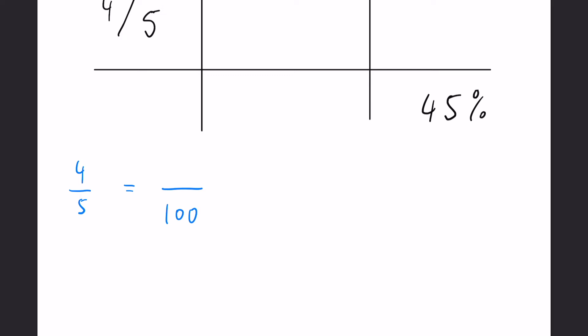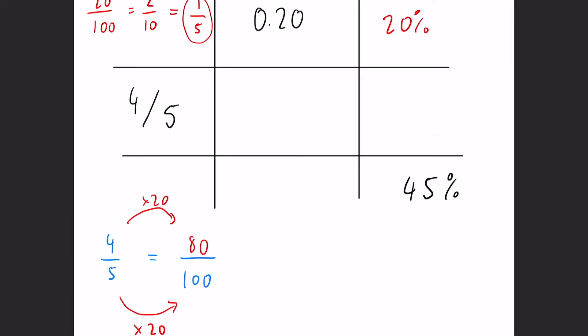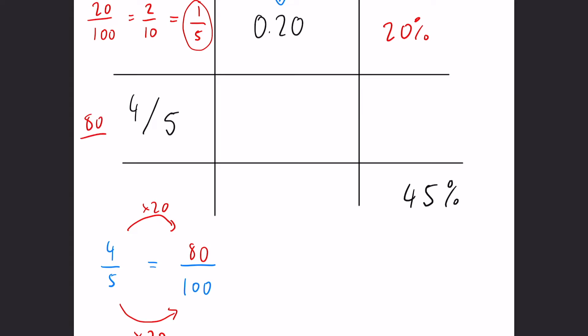So again, the very common phrase with fractions, whatever you do to the bottom, you have to do to the top. Now, what have we done to get from 5 to 100? Again, might not be too obvious at the start, but with practice and with a bit of thinking, we have times that 5 by 20 to get to 100. So that's exactly what we have to do to the top number, the 4. So 4 times 20 gets us 80. So this fraction here can be rewritten as 80 over 100.